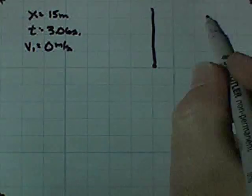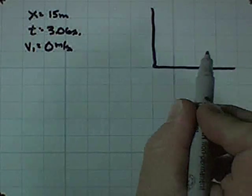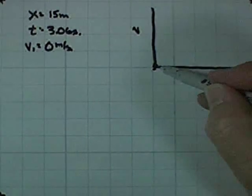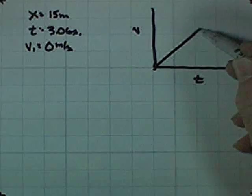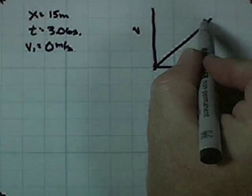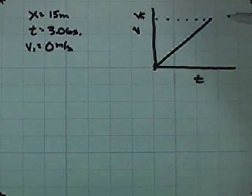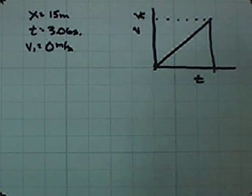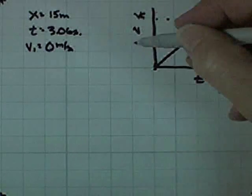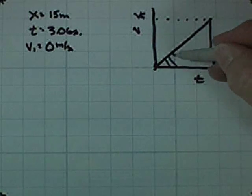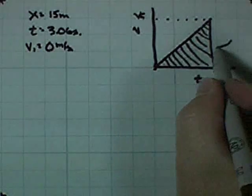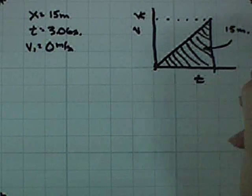In order to do this problem, we really got to make an assumption, and that's basically that on a velocity time graph, we start at zero velocity and accelerate uniformly until we reach some final velocity in a period of time. We know the time is 3.06 seconds. We also know the distance. The area under a velocity time graph is the distance traveled, and we know that this distance is, in fact, 15 meters.